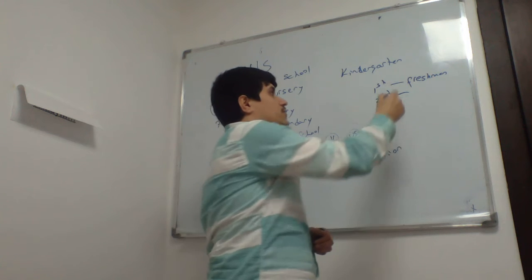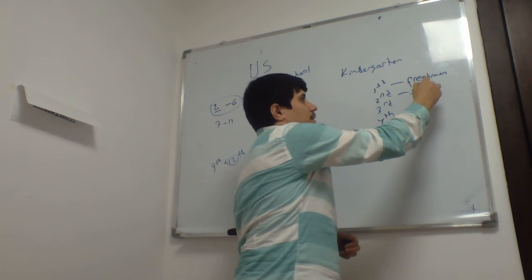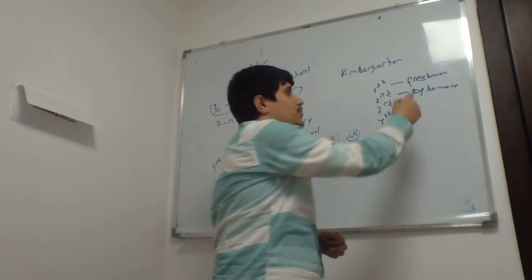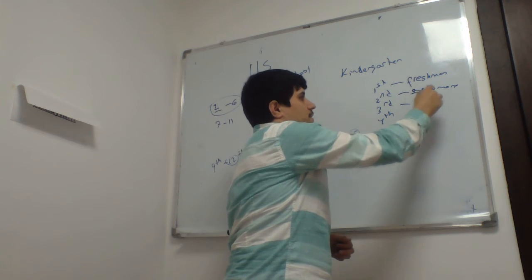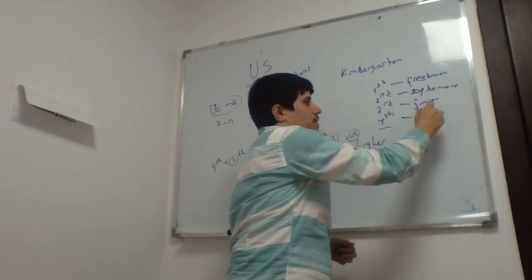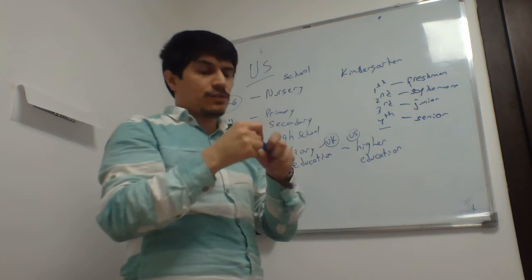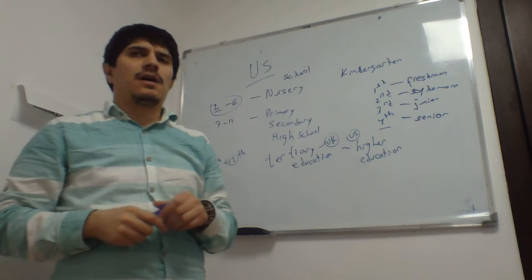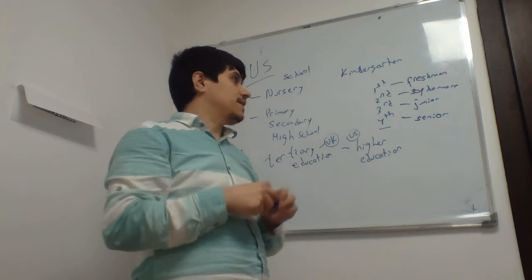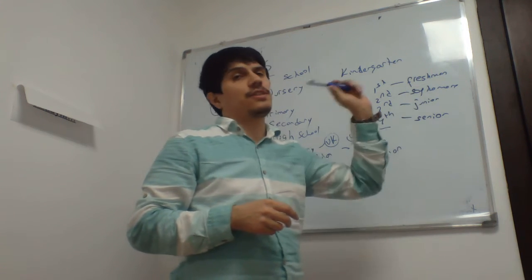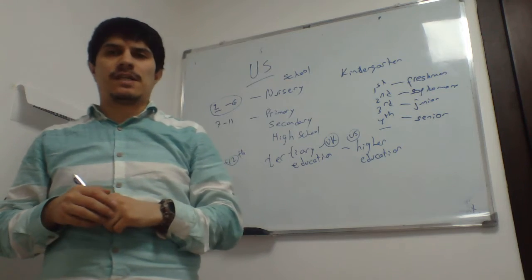The second year is called sophomore, and the third year is called junior, and last year or fourth year is called senior. So if I ask you, do you think Janet is junior or senior? Neither, she is freshman, right?